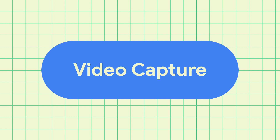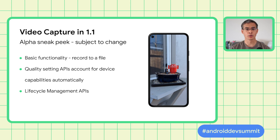Video capture is now being released as part of version 1.1. Let's take a peek into the video capture API. This is still in alpha and details may change, but the overall structure will likely remain the same. Video capture in 1.1 provides the basic functionality of recording to a file. Additionally, a quality setting API is provided that accounts for per-device capabilities automatically. Finally, we'll take a look at the lifecycle management APIs.